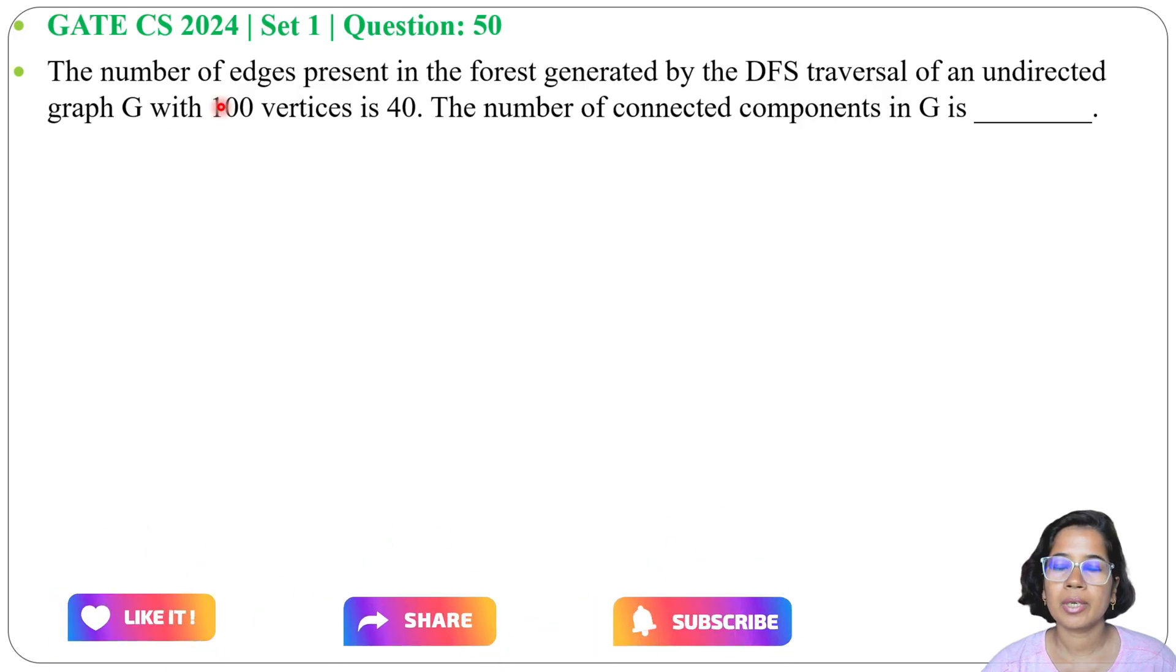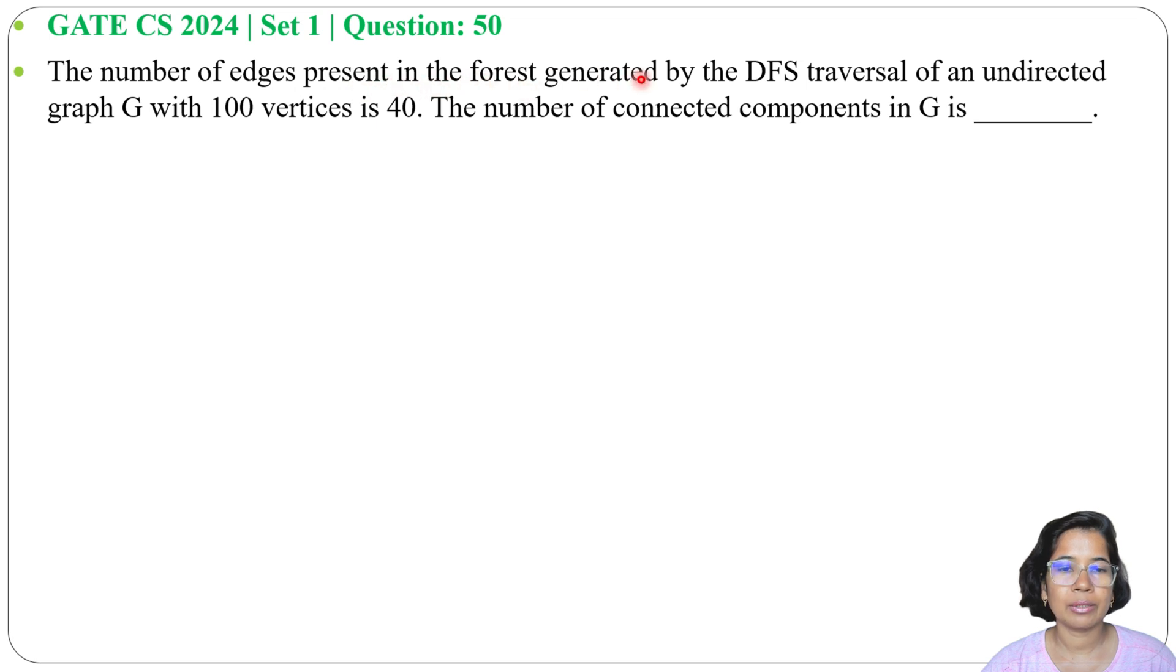Let's solve a previous question on graph theory. This question was asked in GATE CS 2024, Set 1, Question Number 50. The number of edges present in the forest generated by a DFS traversal of an undirected graph with 100 vertices is 40. The number of connected components in G is blank. So here it is saying in a DFS forest there are 100 vertices and 40 edges, and it is asking for the number of connected components in the graph.